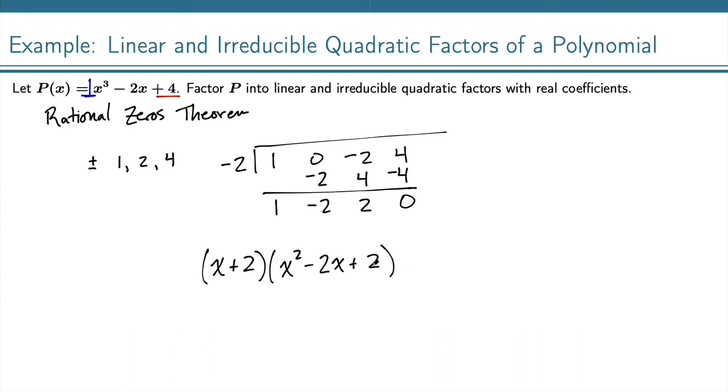So we've got this quadratic here, and now we want to know if we can factor this more. The quick way to check is to check b squared minus 4ac, which in this case is negative 2 squared minus 4 times 1 times 2. That's 4 minus 8, which is negative 4. And because that is less than 0, that tells us that this quadratic is irreducible. So this is our completely factored form into linear and irreducible quadratics.